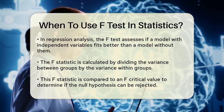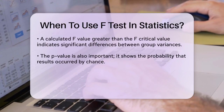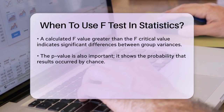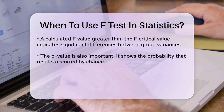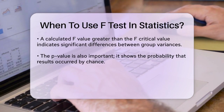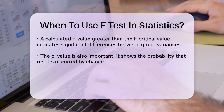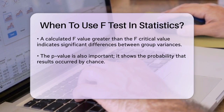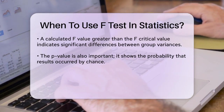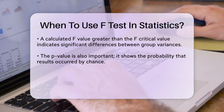When performing an F-Test, you calculate an F-statistic by dividing the variance between groups by the variance within groups. This F-statistic is then compared to an F-critical value to decide whether to reject the null hypothesis. If your calculated F-value is greater than the F-critical value, you can reject the null hypothesis, indicating there is a significant difference between the group variances.